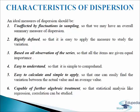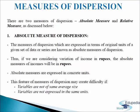These are some of the characteristics of dispersion. There are two measures of dispersion: absolute measure and relative measure. The absolute measure of dispersion is expressed in terms of the original units of a given set of data or series. The absolute measures are measured in the same unit as given with the variables. Thus, if we are considering variation of income in rupees, the absolute measures — range, quartile deviation, mean deviation, and standard deviation of income — will be in rupees.